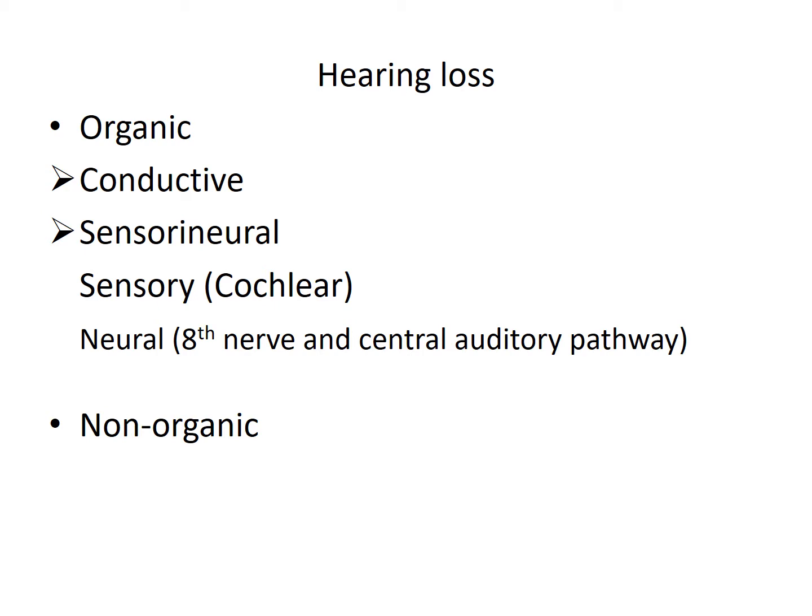Conductive type of Hearing Loss means any pathology which hampers the conduction of sound from the external ear up to the stapedio-vestibular joint, leading to Conductive Hearing Loss. Sensory Neural Hearing Loss — Sensory means any pathology of the Cochlea, and Neural means any pathology either of the Eighth Nerve or the Central Auditory Pathway. Neural is sometimes also called Retro-Cochlear Pathology.